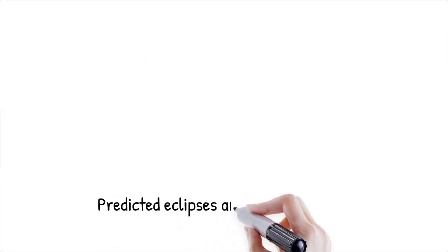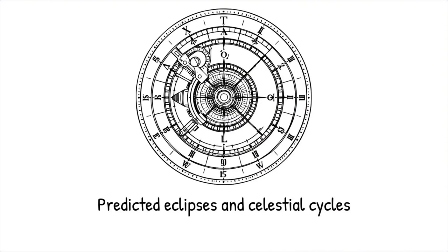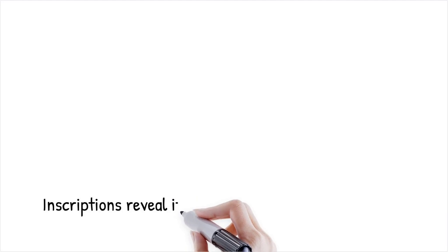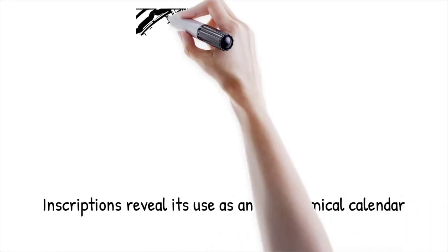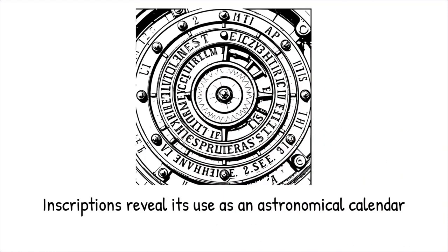The mechanism was used to predict astronomical events such as eclipses, the positions of the sun and moon, and possibly the cycles of the planets. Its design indicates that ancient Greeks had a sophisticated understanding of celestial movements and mathematical cycles. Researchers have deciphered inscriptions on the device that help explain its use as an astronomical calendar. This insight demonstrates that early civilizations combined observational astronomy with advanced engineering to track time and celestial phenomena.